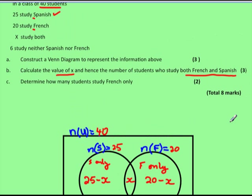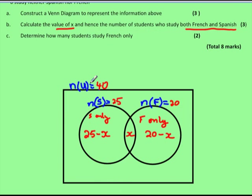We've placed the information so far — 25 minus X, X, and 20 minus X. We also have 6 students doing neither Spanish nor French. That information cannot go inside either of the two circles, so those 6 students go outside both subsets. That completes our Venn diagram.